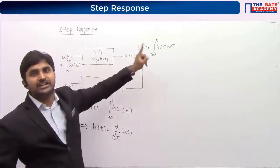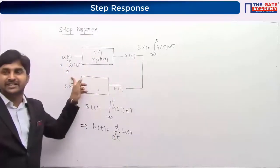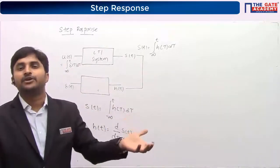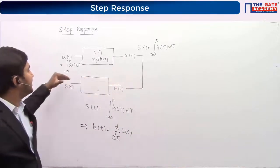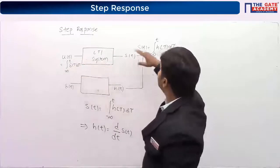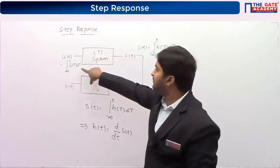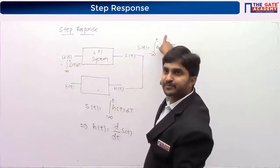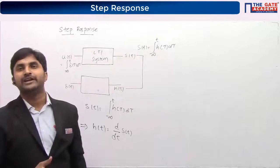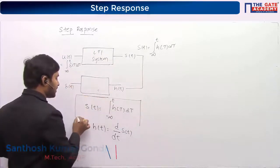If the integration of δ(t) gives you the integration of h(t), it is because of the fact that you are doing integration, which is basically summation. Additivity is supported by a linear system. Since this is a linear system, if you integrate the input side, the output side will also be integrated. That is why s(t) is the integration of h(t).